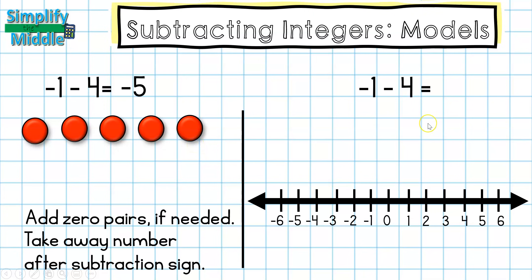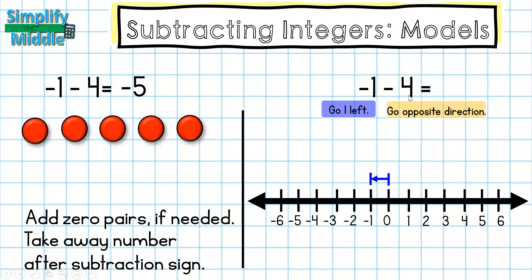I'm going to do the same problem on the number line. Because this is negative 1, I'll start at 0 and go 1 to the left. From there, I want to go the opposite of 4 to the right, so I will be going 4 to the left. And I land at negative 5 here as well.